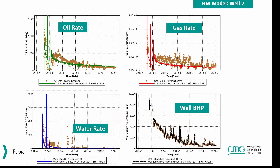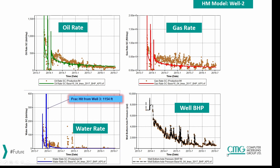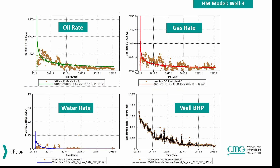Those are the frac hits from well two and well three respectively. For well two, there is only one fracture hit that occurs from well three — you see the water spike and pressure spike at that point, and the rates and pressure are matching very well. Well three has no frac hits because it came on last, but just like the other cases, the rates and pressure are matching very closely.